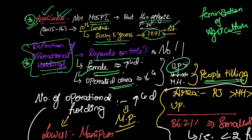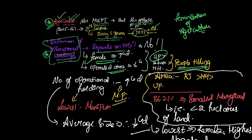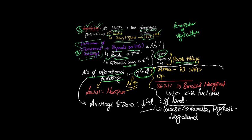If you take a look at the number of people who are filling this operational holdings, UP has the highest number of people. At the same time, you have to remember that the same survey says that number of operational holdings is increasing whereas operated area is decreasing. This means that land fragmentation is happening - land fragmentation.